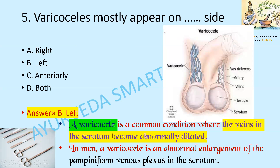Varicocele mostly appears on which side — right, left, anteriorly, or both? It mostly appears on the left side. Varicocele is a common condition where the veins in the scrotum become abnormally dilated. Here we can see most of the veins are dilated. In men, a varicocele is an abnormal enlargement of the pampiniform venous plexus in the scrotum.